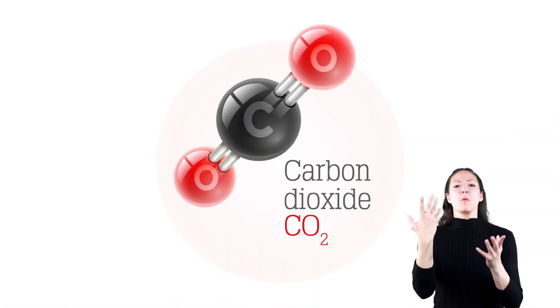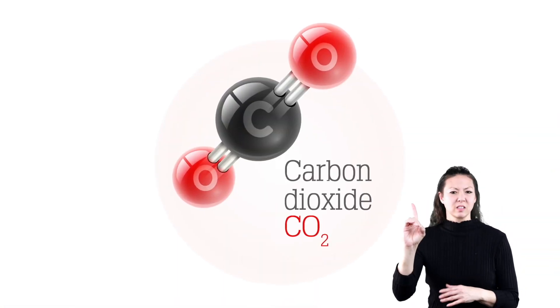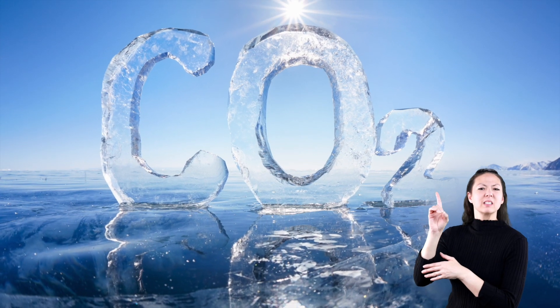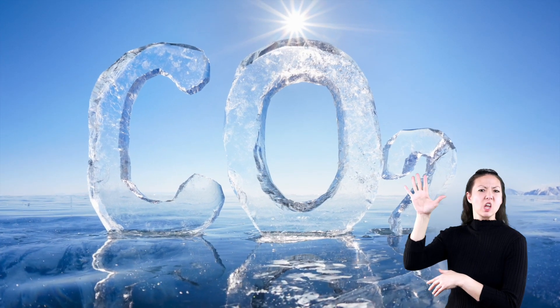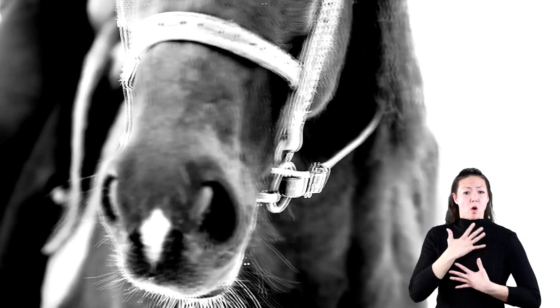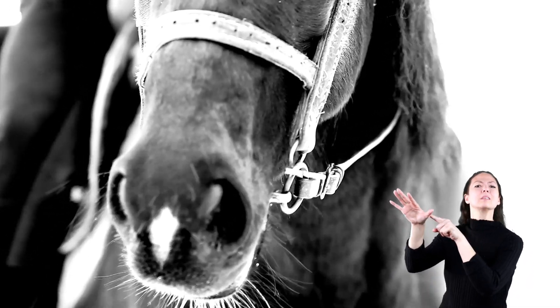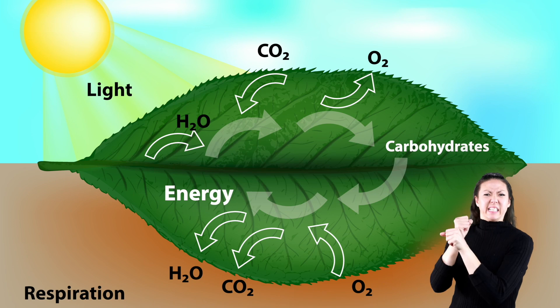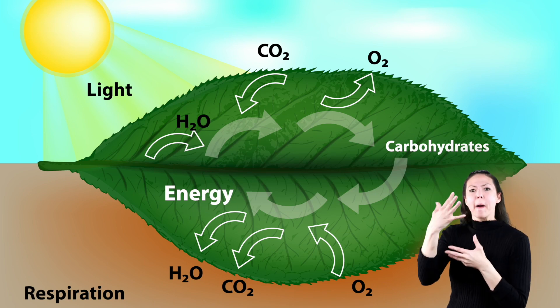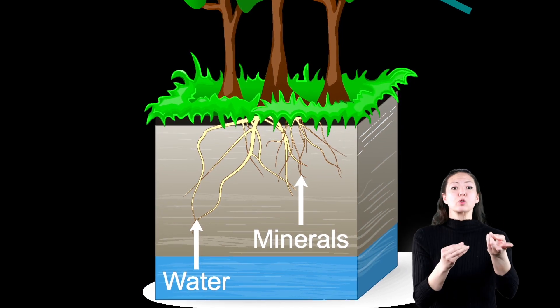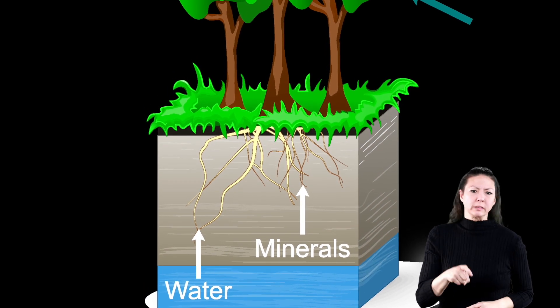Number one: carbon dioxide is required. Carbon dioxide is a gas in the air. All animals expel carbon dioxide when they breathe out — plants like that! Plants need carbon dioxide, and it is absorbed into the leaves of the plant.